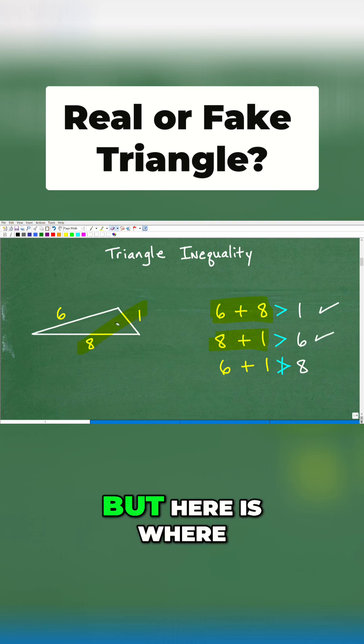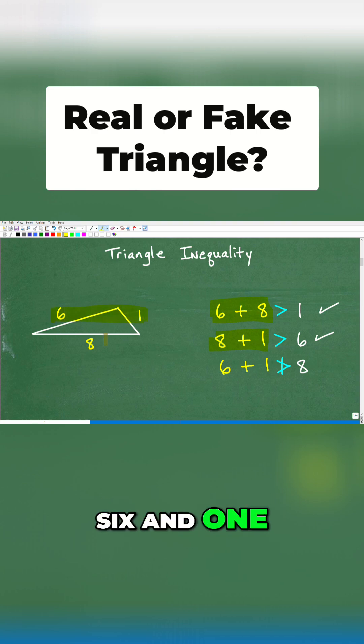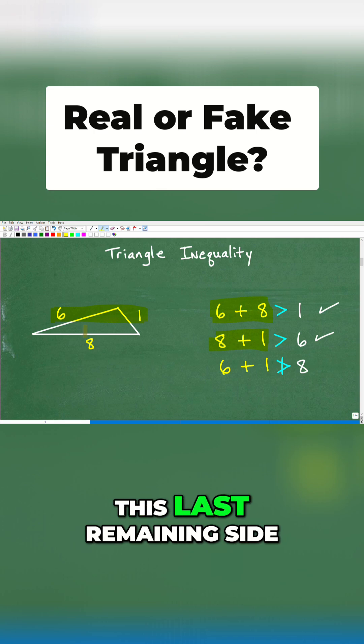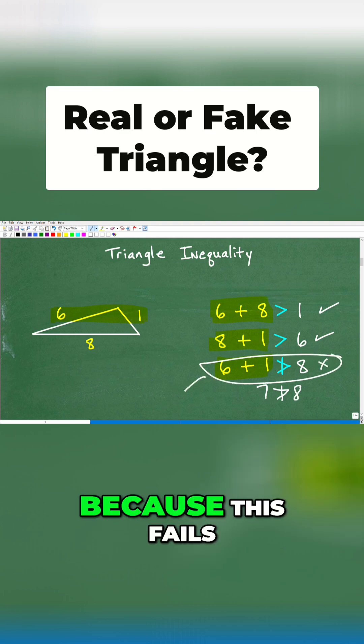Everything's looking pretty good. But here is where we have some problems. How about these two sides right here? Six and one, is that greater than this last remaining side? Well, six plus one is seven. Seven is not greater than eight. So this fails, so this right here, because this fails, this is not a real deal triangle.